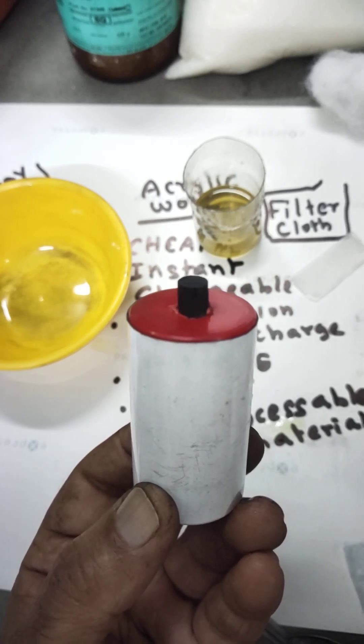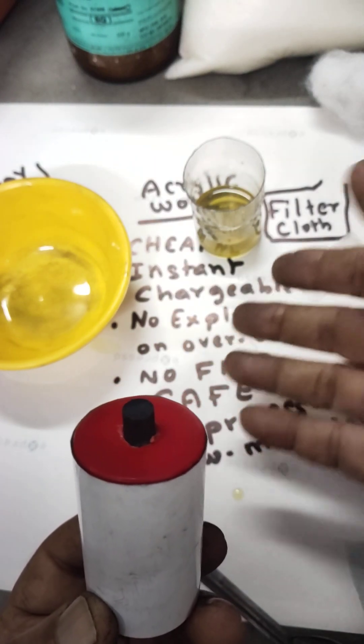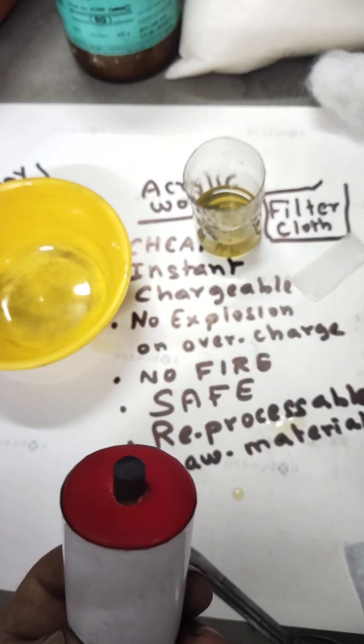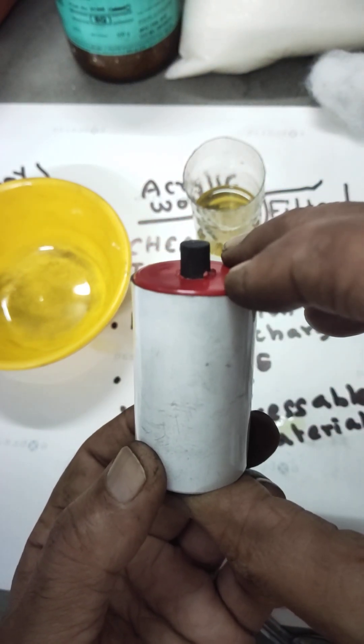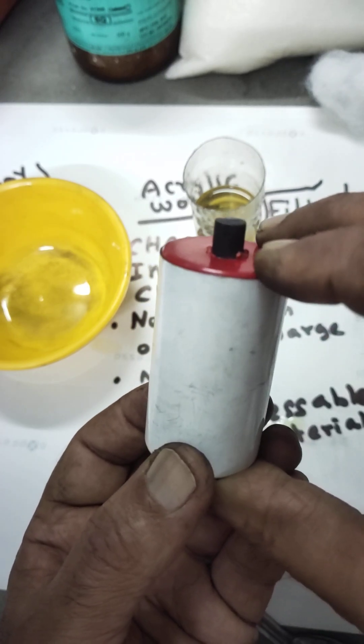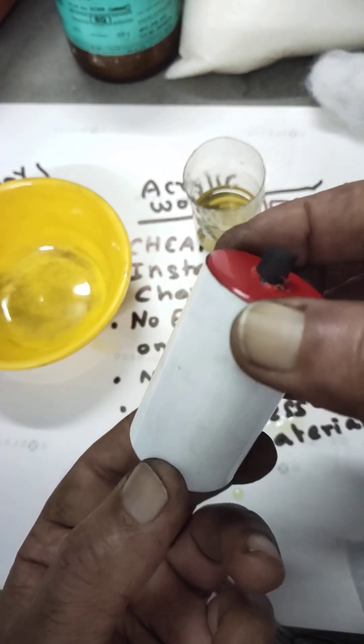But this is very cheap, instant chargeable, aqueous, no explosion even after overcharging. It won't hurt, it's like a capacitor. Aluminum carbon batteries are more of a battery and capacitor combined, so it can withstand even overcharging voltages. Very useful for the future for all electrical appliances, electronic and electrical.